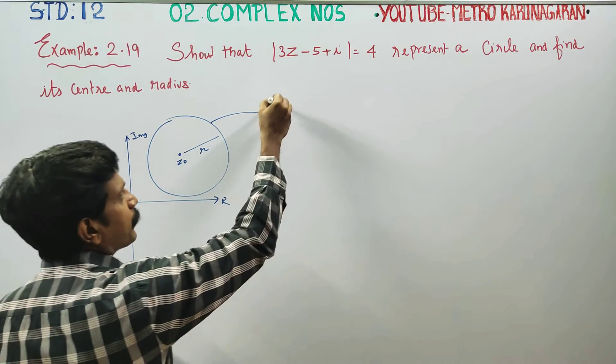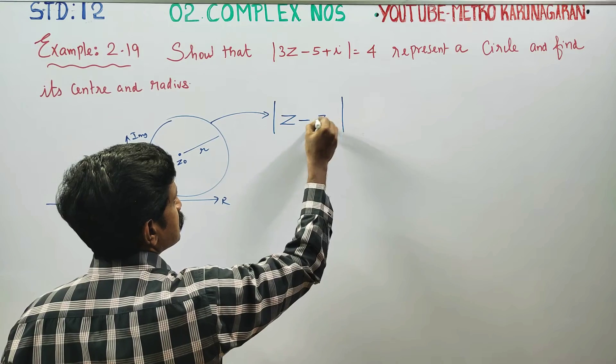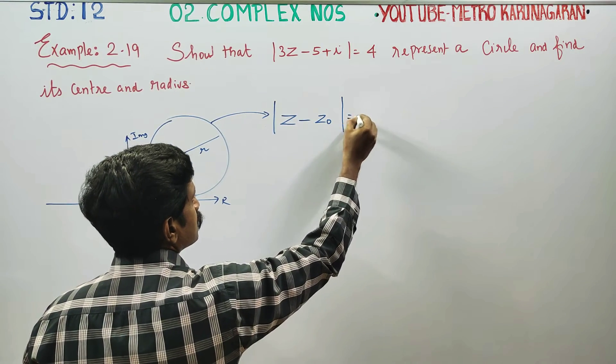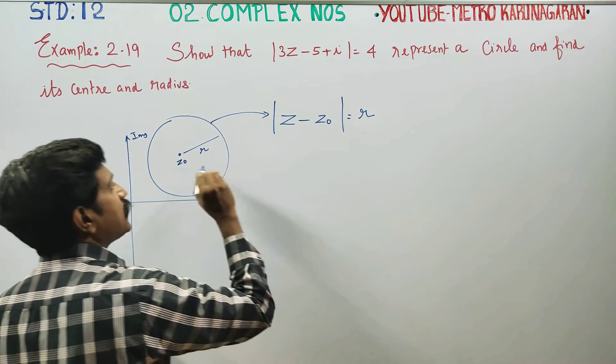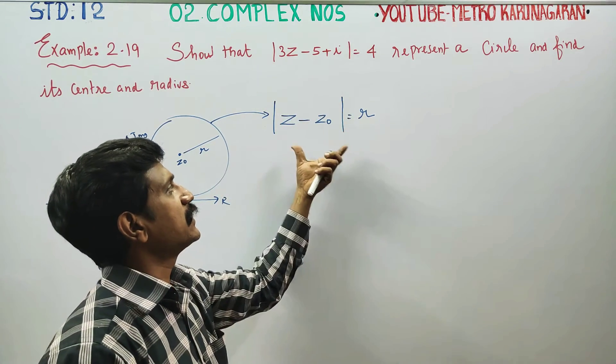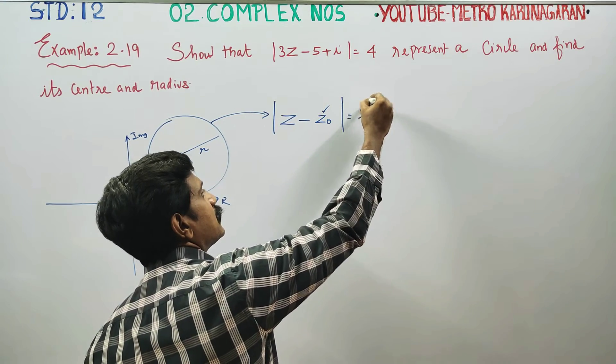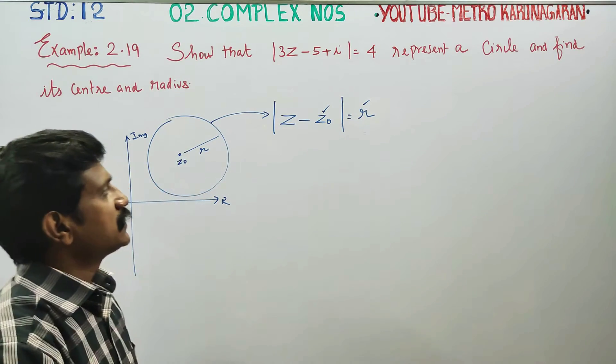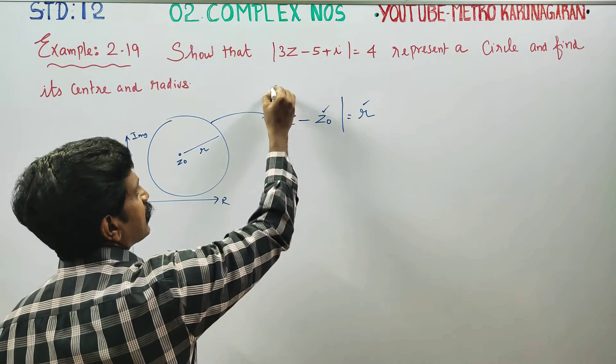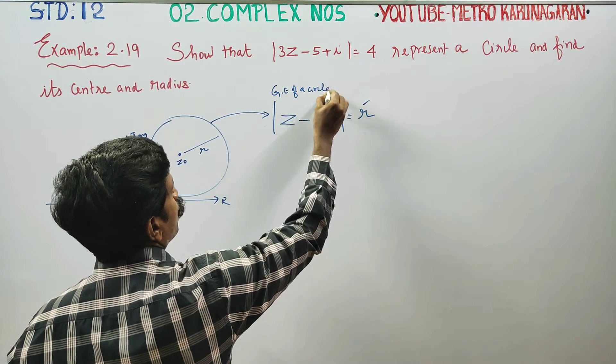In this style, you can see |Z minus Z0| is equal to R. In this style, you can see an equation where you have the center, this is the radius. This is the general equation of a circle in complex number.